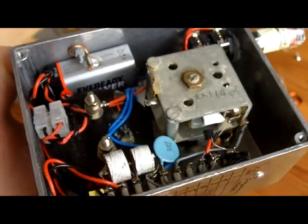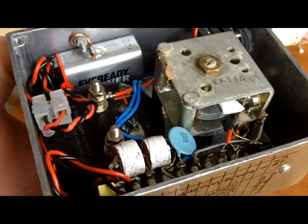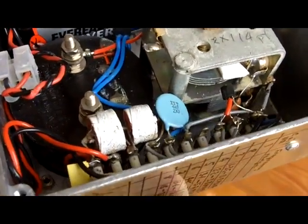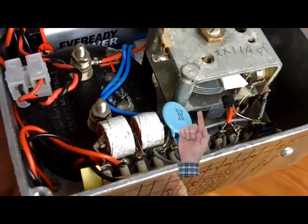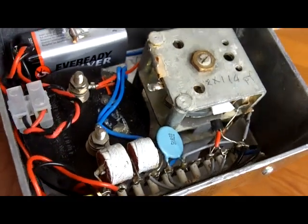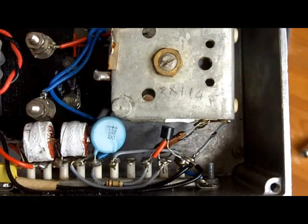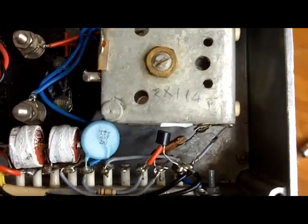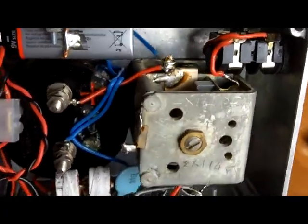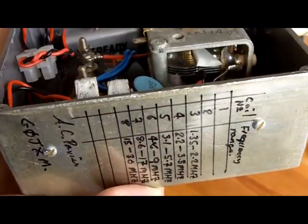That's a two gang tuning capacitor and you can see the top section there. There's four moving plates and the bottom section had a lot of moving plates but I pulled them off the stator so both halves of the capacitor are the same and I seem to have scratched on there that it's two times 114 picofarads. So I guess that's what it is. Okay, a junk box special.